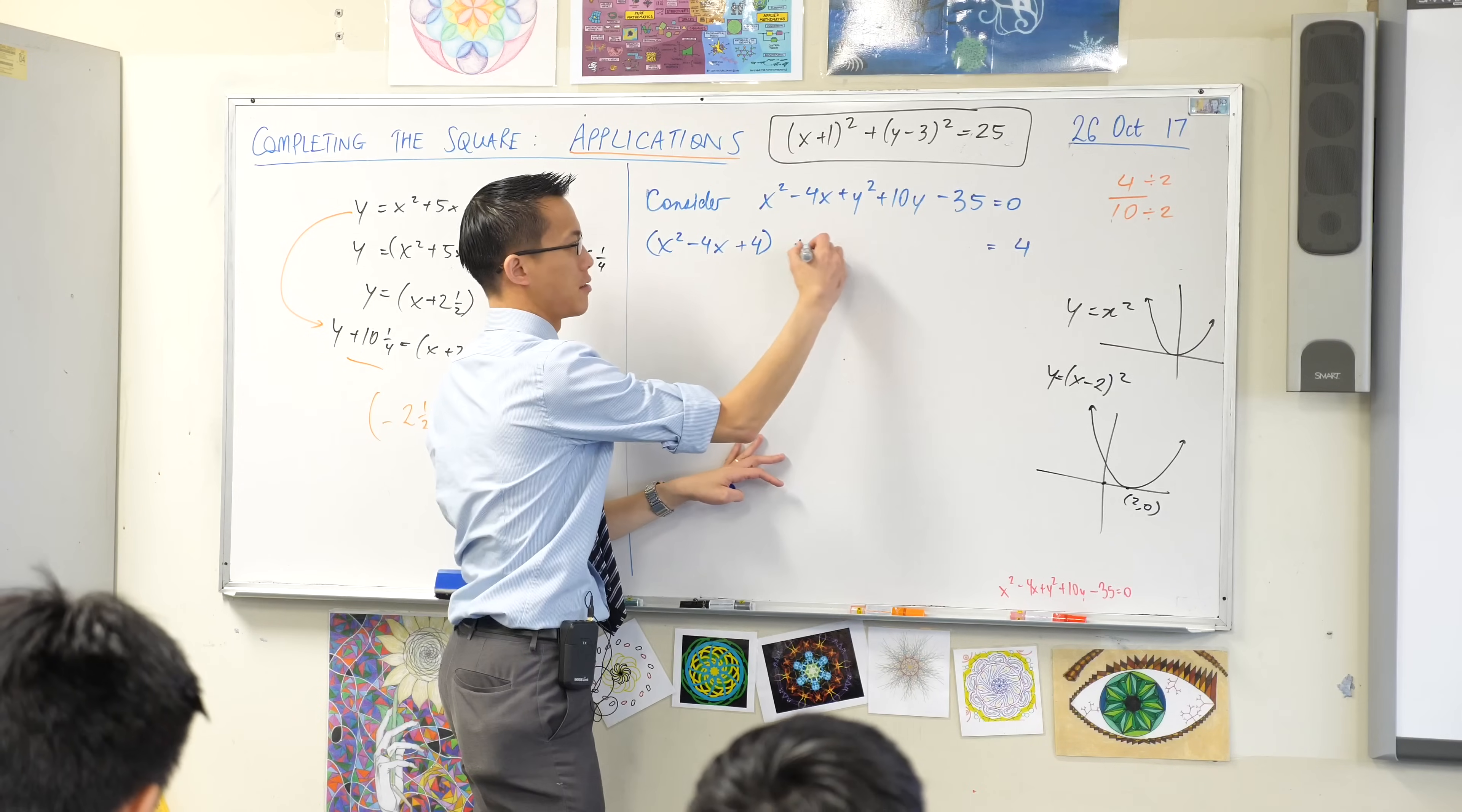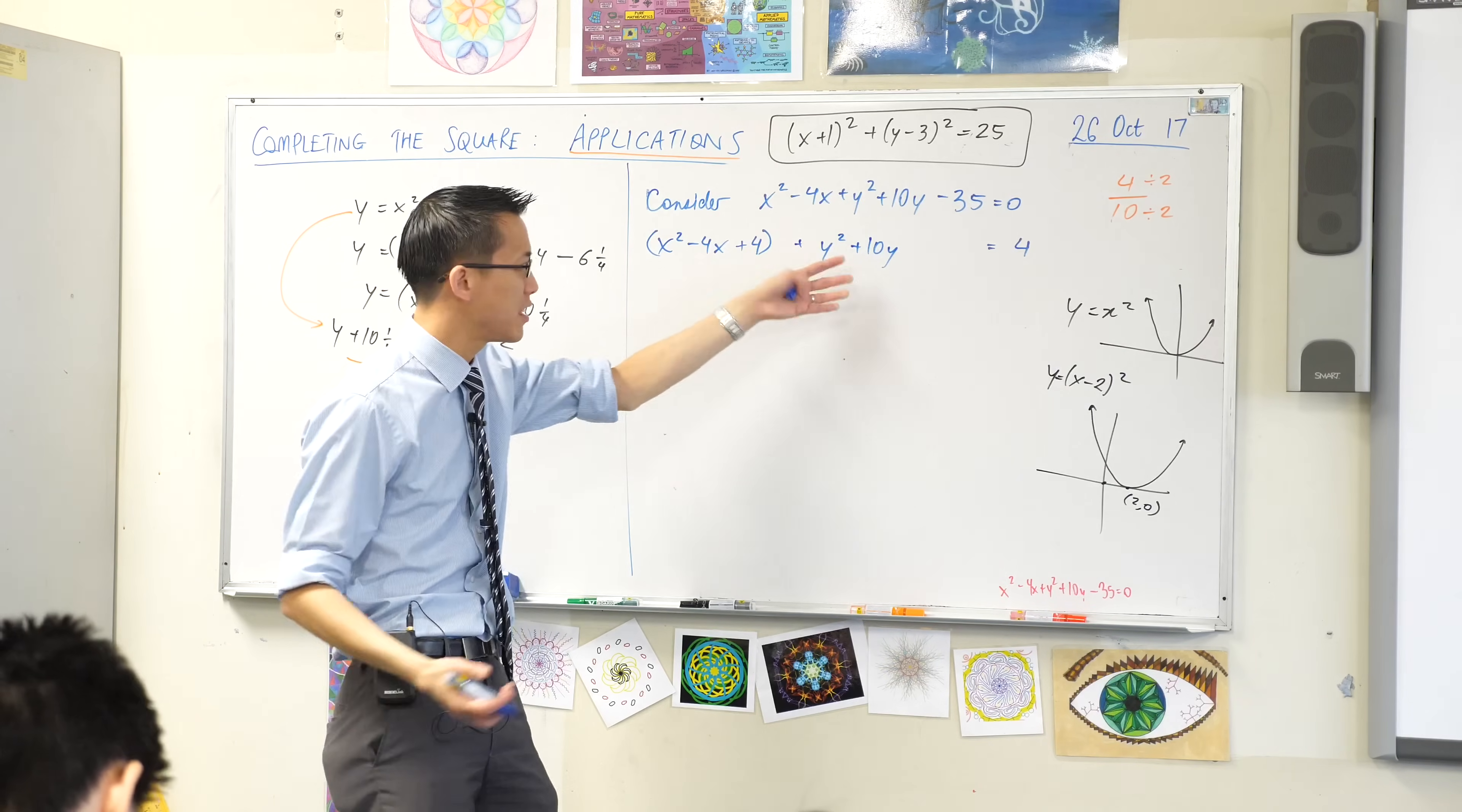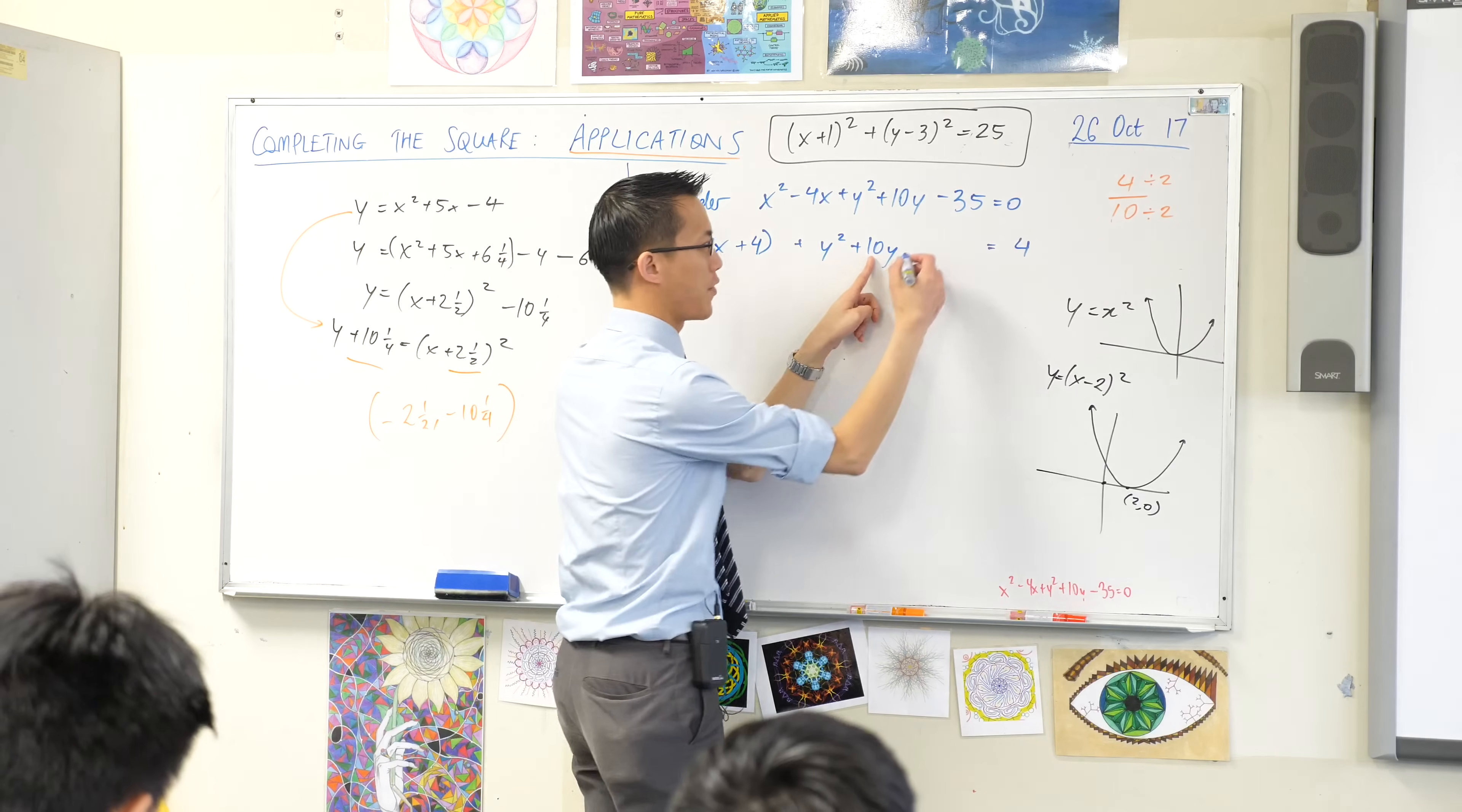Now I have a look at the y's. Here's a y term, and here's another y term. This, I can complete the square as well. I know you're used to seeing the x's, but it's just another letter. It's no big deal. I could have called it x or y or s, I'll call it anything I liked. Look at the number. What do I add? 25.